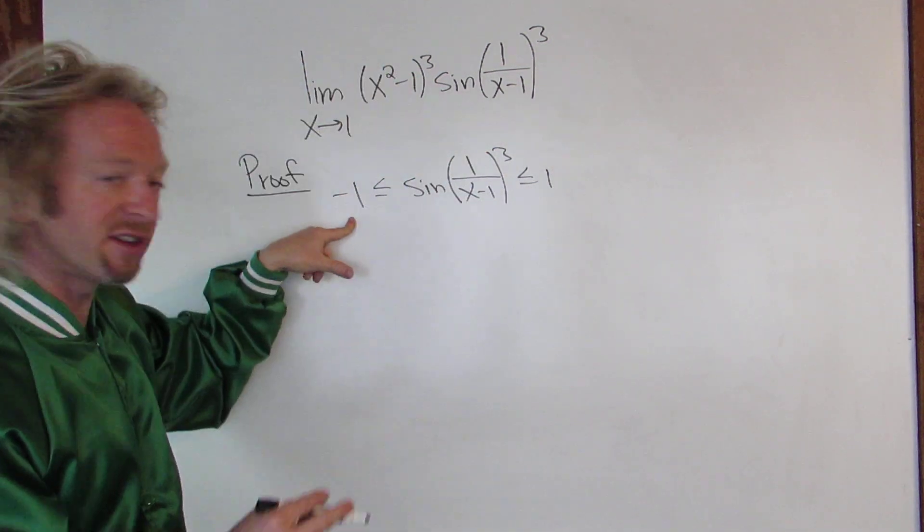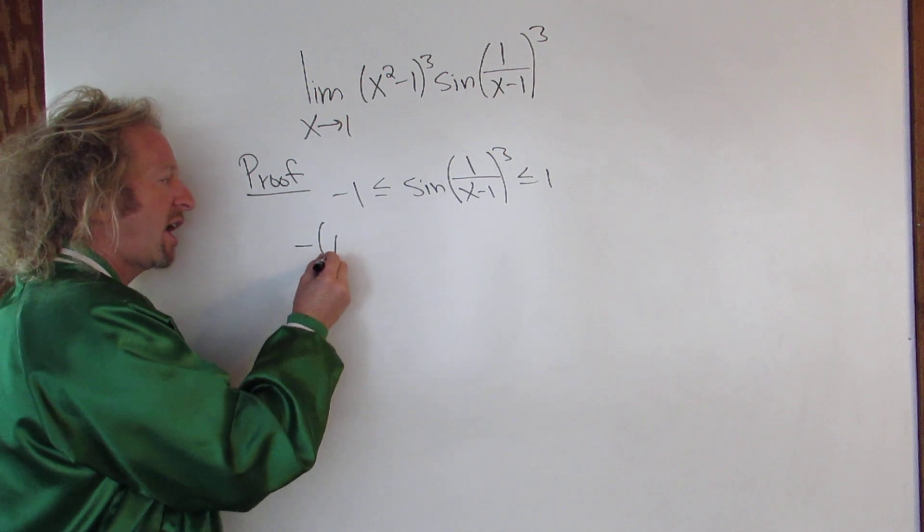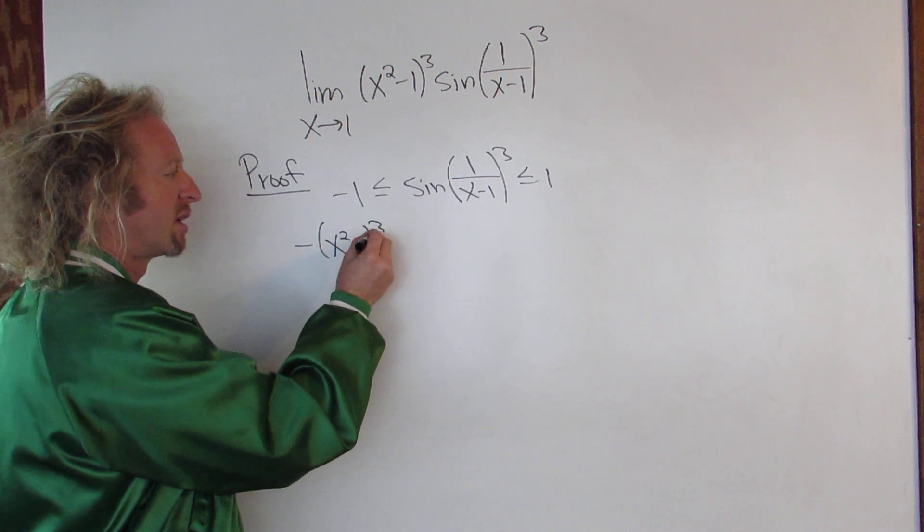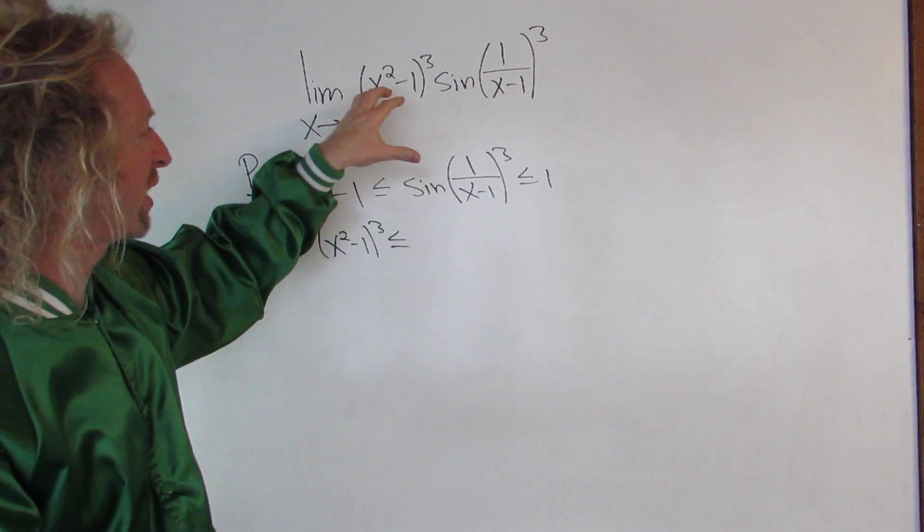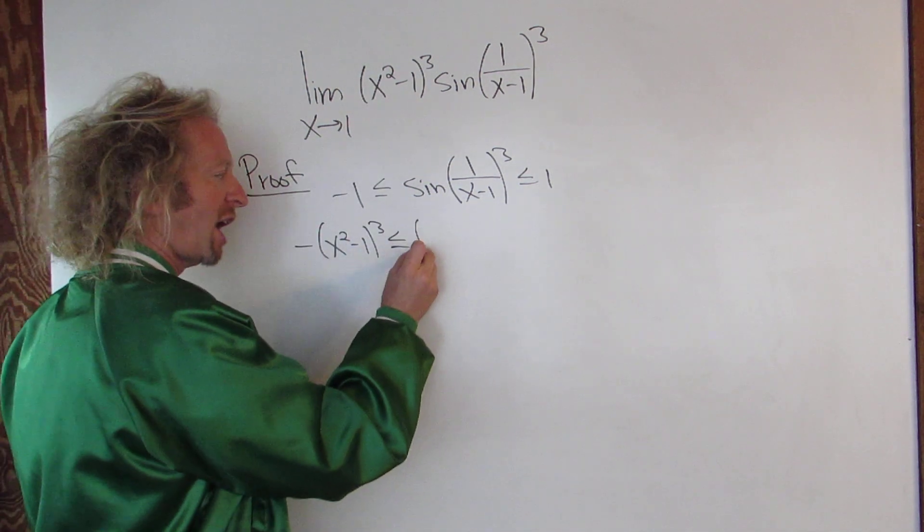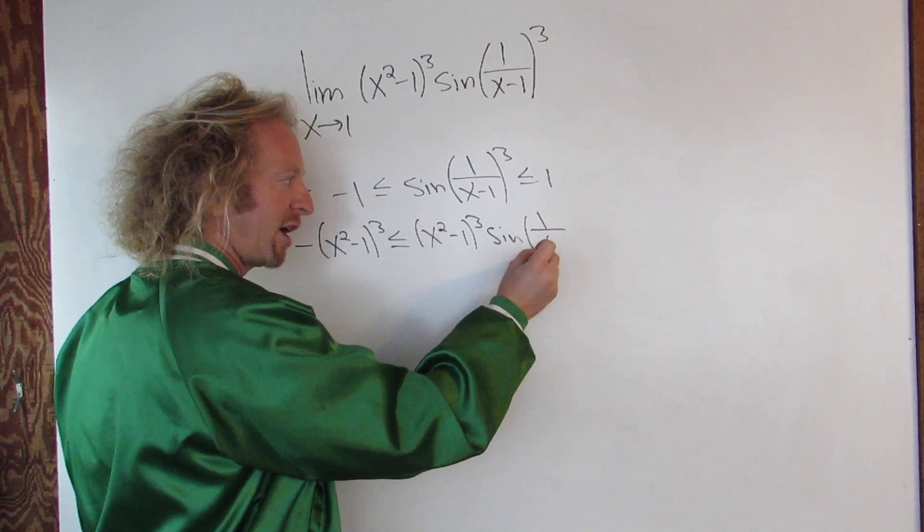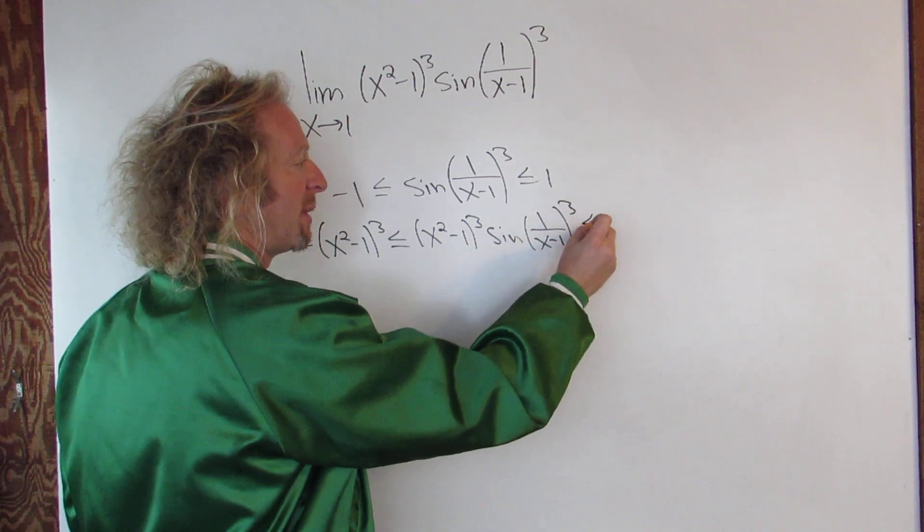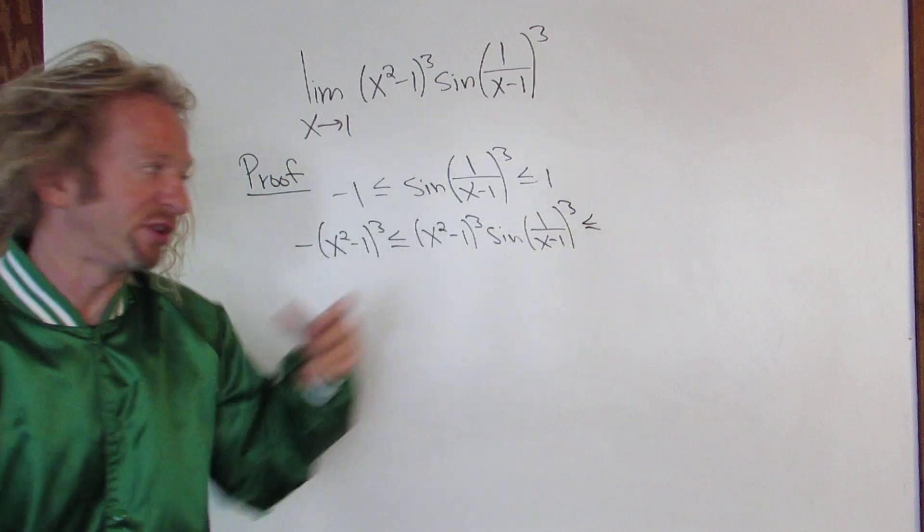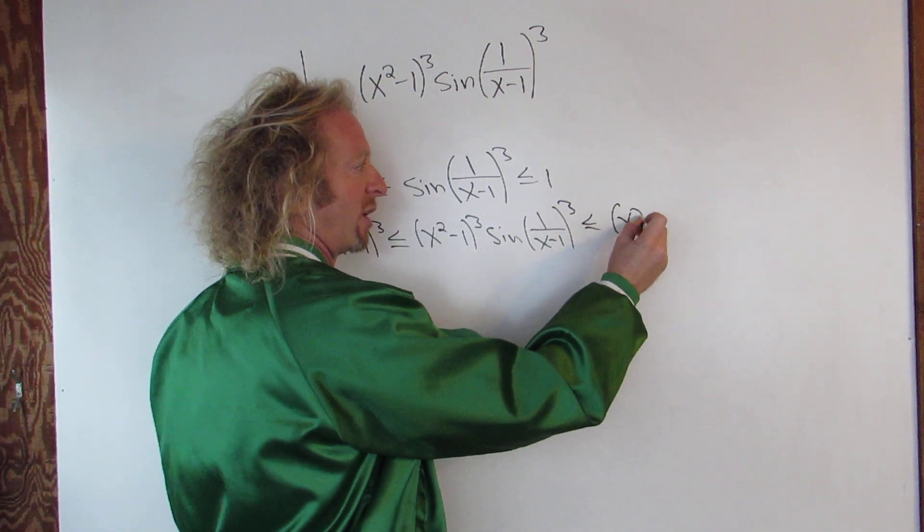So multiplying on the left by this we're going to get negative (x squared minus 1) cubed, less than or equal to, and then multiplying this by this we're going to get (x squared minus 1) cubed times sine of 1 over (x minus 1) cubed, and then less than or equal to, and then this goes over here, so this will also be (x squared minus 1) cubed.